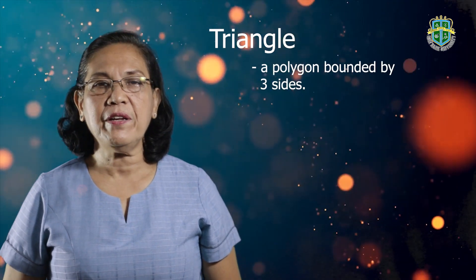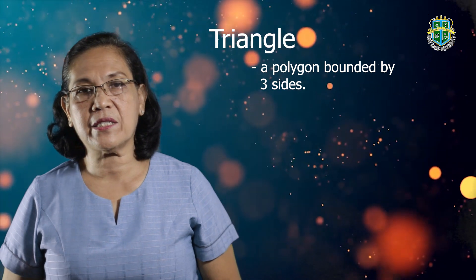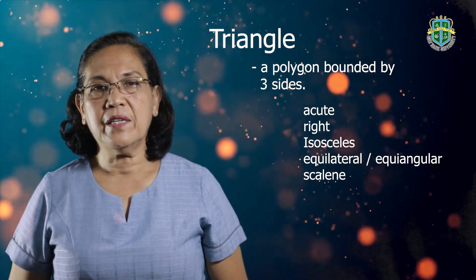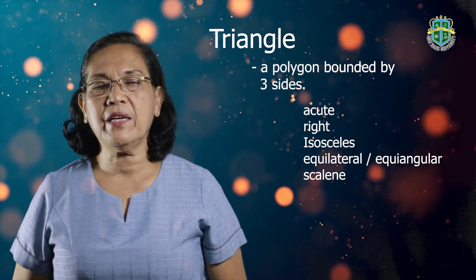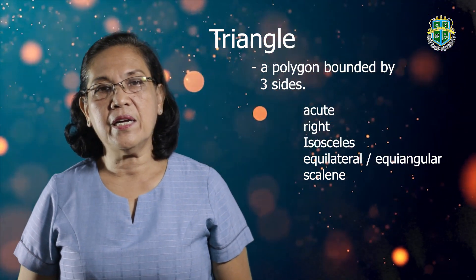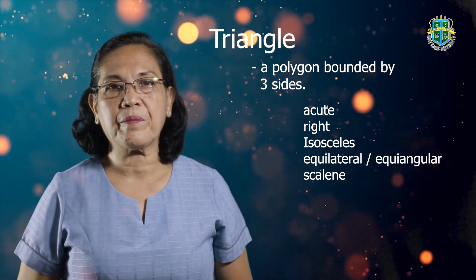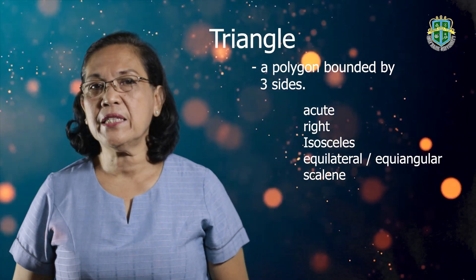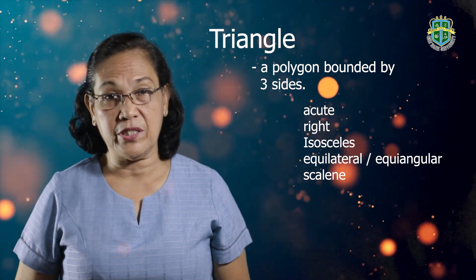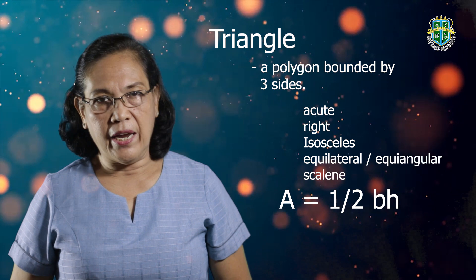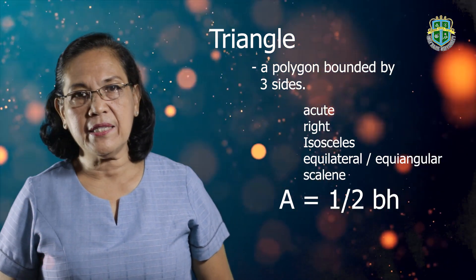Another polygon is the triangle. This is a geometric figure with three sides. There are many types of triangles: the acute triangle, the right triangle, isosceles triangle, the equilateral and equiangular triangle, and the scalene or obtuse triangle. Whatever type the triangle is, the formula in getting the area of a triangle is: area of the triangle equals one-half base times height.